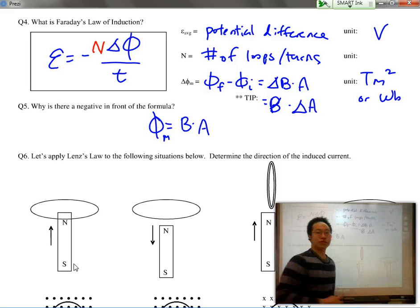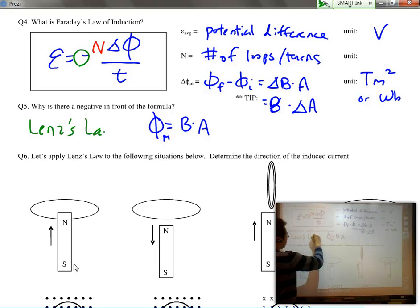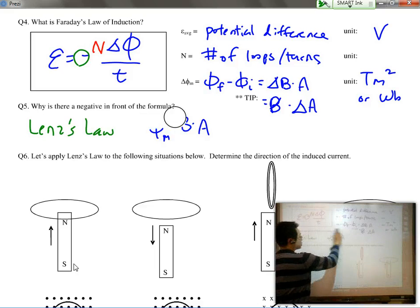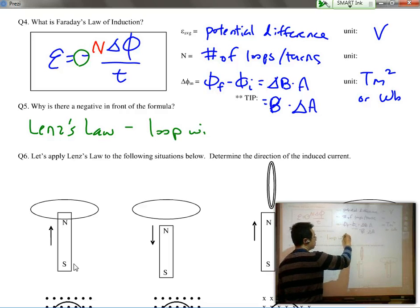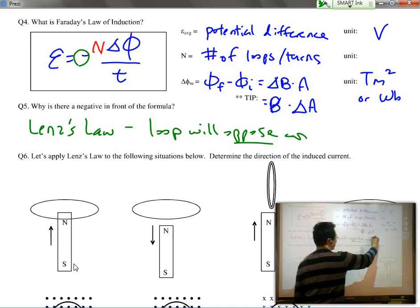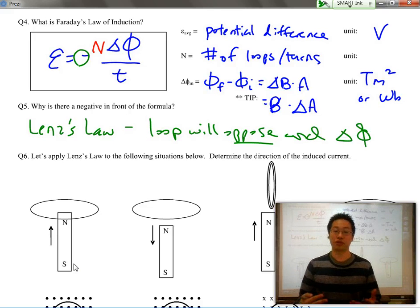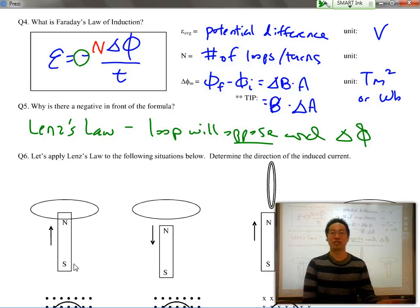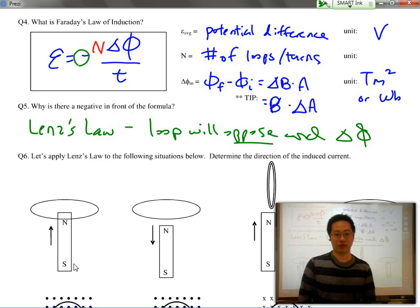Now notice that there is a negative sign in front of the formula. That's really because of Lenz's law which states that the loop will oppose any change in flux. So if this flux is increasing, the loop is going to create a flux in the opposite direction, while if the flux is decreasing, the loop will create its own flux in the same direction.